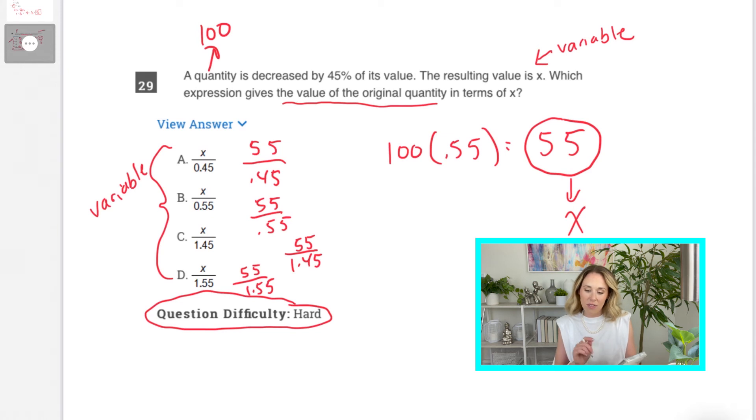All right, let's see. So, I'm going to start with D, right? Because I like to bury the answer and work my way up. So, I'm going to do 55 divided by 1.55. And I get 35. So, that doesn't work. So, let me try 55 divided by 1.45. I get 37. That doesn't work. Let me try 55 divided by 0.55. Oh, I get 100. So, the answer is B.